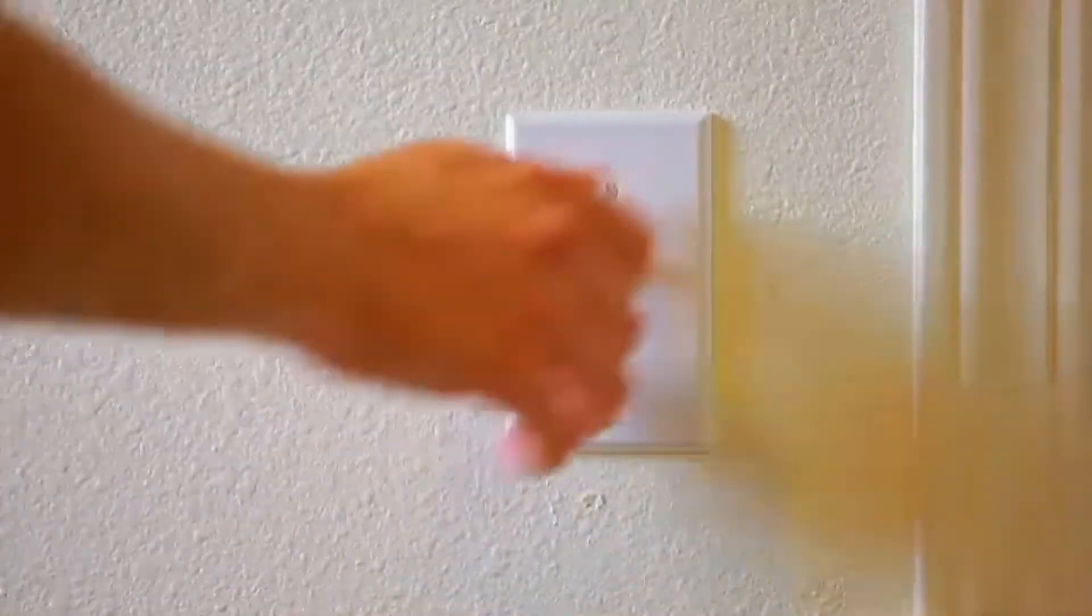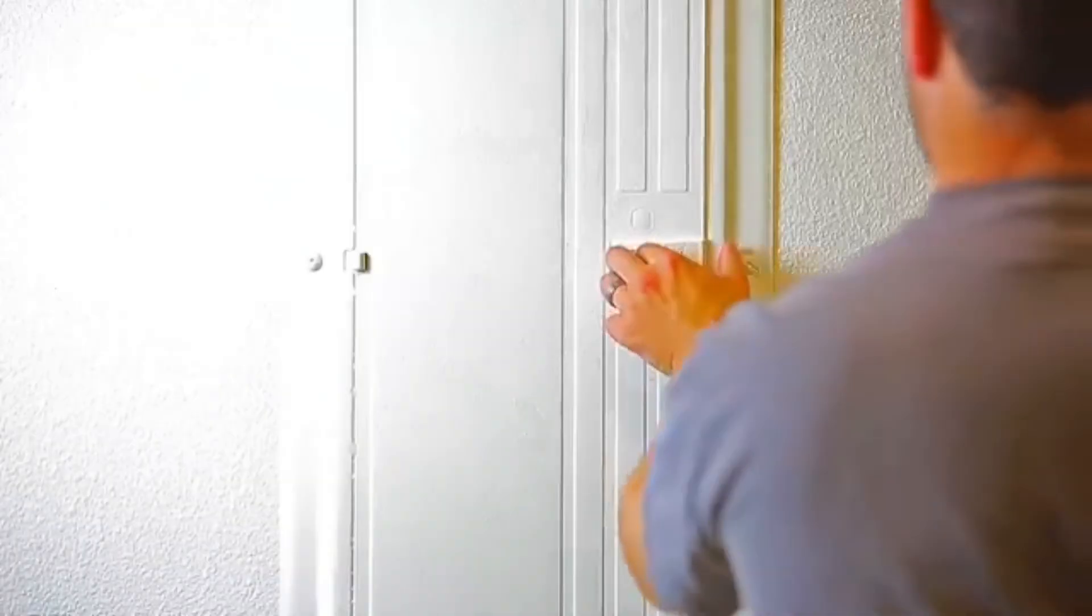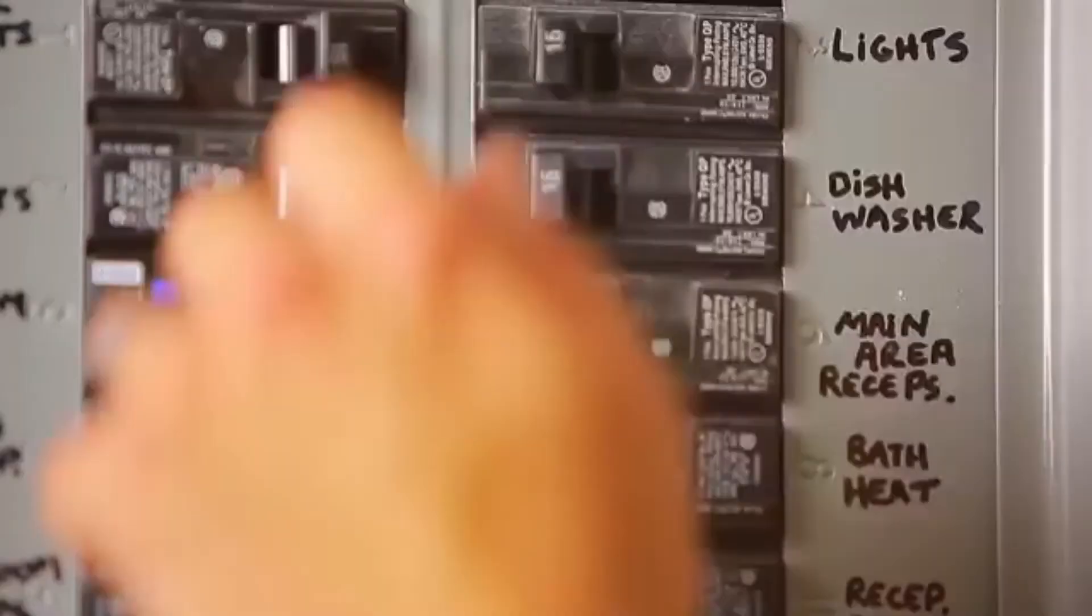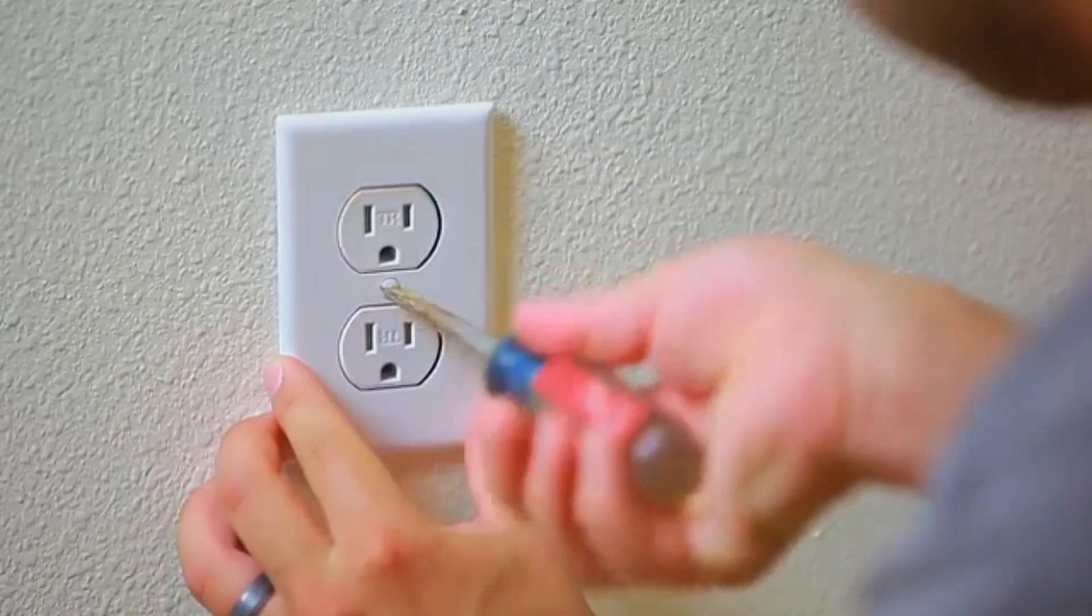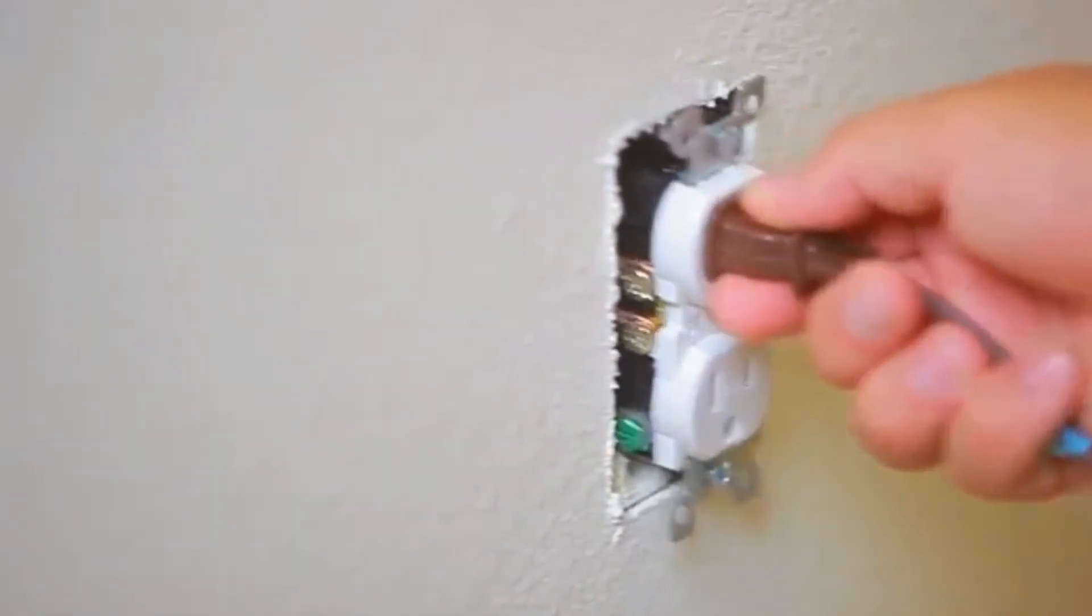If your outlets or switches are hot to the touch, turn off the power at the circuit breaker and have them professionally inspected. Replace any broken or loose fitting electrical outlets. The wiring should never be left exposed.